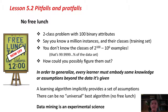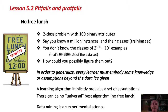In order to generalize, every learner must embody some knowledge or assumptions beyond the data it's given. Each learning algorithm implicitly provides a set of assumptions. The best way to think about those assumptions is to think back to the boundary visualizer we looked at in Lesson 4.1 — different machine learning schemes are capable of drawing different kinds of boundaries in instance space, and these boundaries correspond to assumptions about the sorts of decisions we can make. There is no universal best algorithm. There's no free lunch. Data mining is an experimental science, and that's why we've been teaching you how to experiment with it yourself.